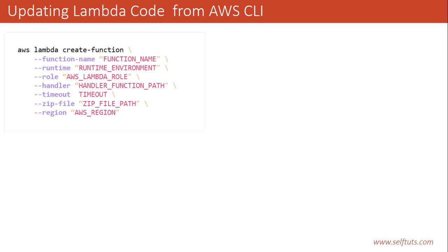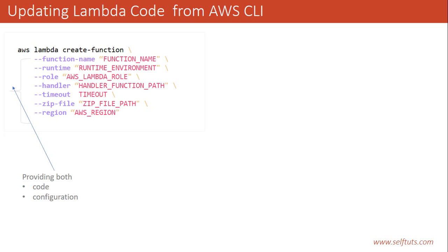In our previous video, we have seen how to create a Lambda function using AWS CLI. We installed the AWS CLI and used it to interact with the Lambda service and perform the create-function action. The create-function action accepts both code and configuration parameters, so while creating a new Lambda function, we have to provide both code and configuration.